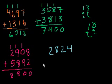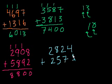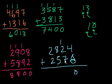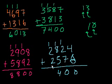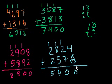Let's do one more: 2,824 plus 2,576. 4 plus 6 is 10. 1 plus 2 plus 7 — that's 10 again. 1 plus 8 is 9, plus 5 is 14. And 1 plus 2 plus 2 is 5 — so the answer is 5,400. Just remember that when I carry the 1, I'm essentially saying — for example, 4 plus 6 equals 10, that's 0 ones and 1 ten, and that's why I put the 1 in the tens place. I'll see you in the next video where we will do 4-digit subtraction.